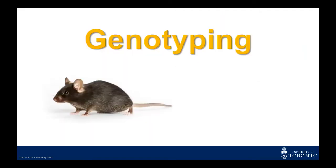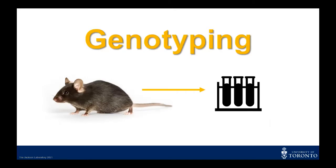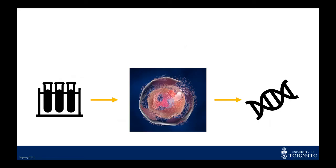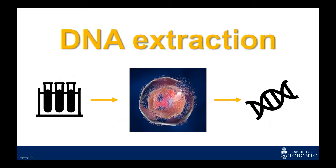To do genotyping, first we have to take some cell samples from mice. In order to find out their genes, we need the DNA. In order to get the DNA from inside the cells, we have to break up the cells. This is called DNA extraction.